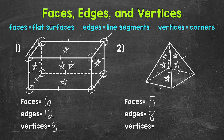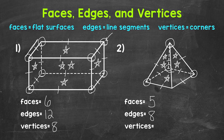Now let's identify and count the vertices. We will start with the vertex up top: one. Now let's go around the base: two, three, four, and five. So five total vertices. So there's an explanation of faces, edges, and vertices.